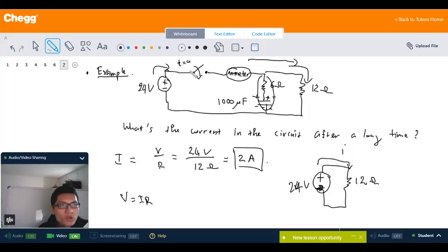We insert an ammeter to measure the current later after time goes by. This circuit has two resistors connecting here, 12 ohms and then this one 6 ohms.